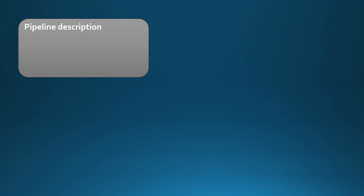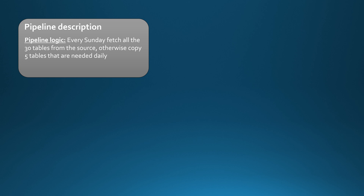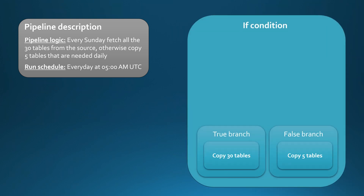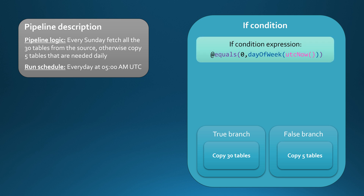Our pipeline logic is that every Sunday we want to fetch all 30 tables from the source; otherwise, we only fetch the five tables needed daily. Our run schedule is every day at 5 AM UTC. In the If Condition block we have a true branch with a 'copy 30 tables' action and a false branch with a 'copy 5 tables' action. I've written an expression that checks if the day of the week is Sunday, resolving to true in that case.